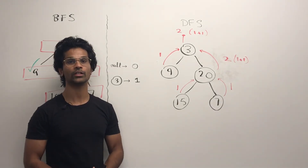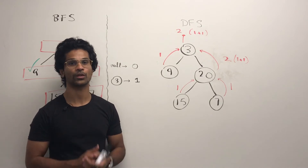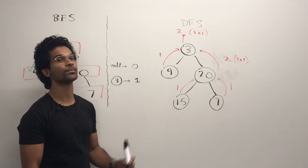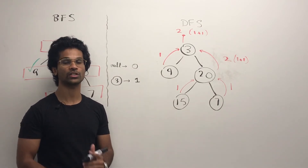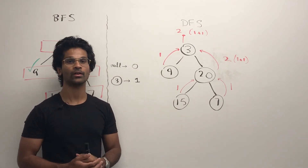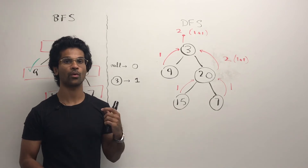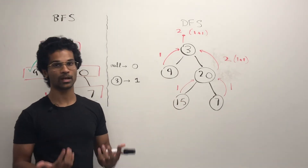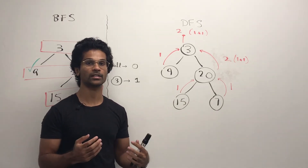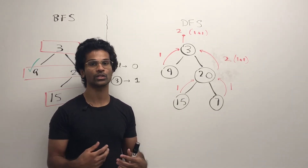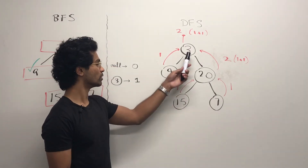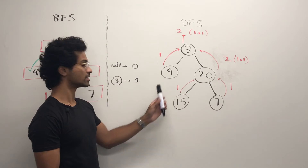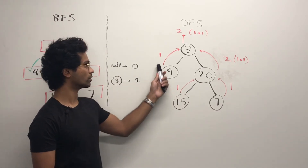For DFS, we're going to do it recursively, so let's come up with our base cases. If we have a root which is null, we return 0. If we have a root which is just one node, we're going to return 1. So when we ask our root to tell us its minimum depth, it's going to say, let me ask my left and right child, and they're going to recursively ask their children the same thing. So 3 is going to ask 9 and 20, and 9 is a base case, so it's going to return 1.